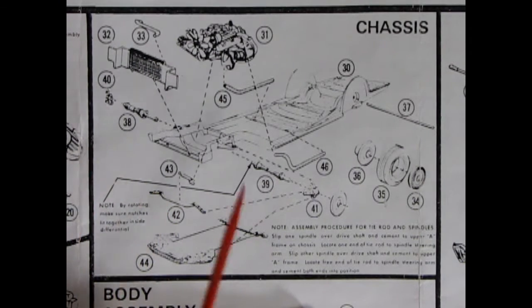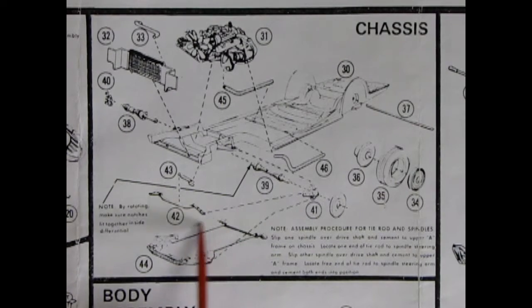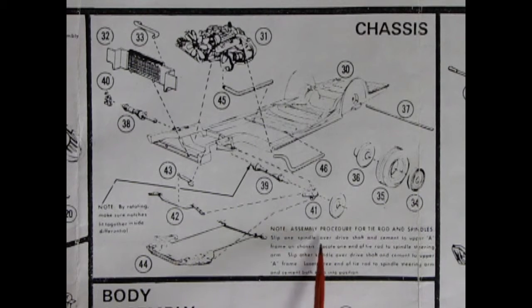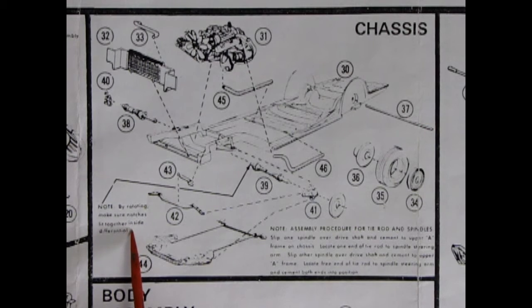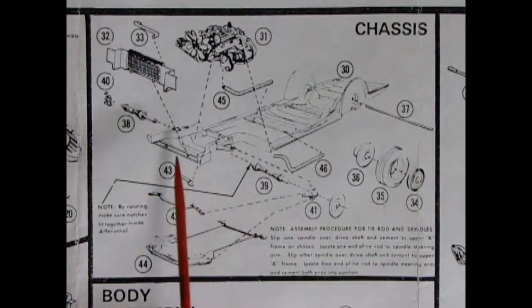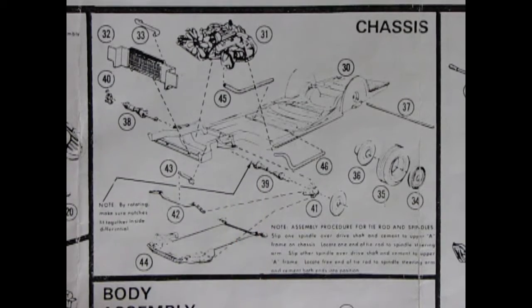There is front kingpins and steering, as well as all the different braces and our tie rods here. Oh, no, this is tie rods. This is the undercarriage. It says, note, assembly procedure for tie rods and spindles. Slip one spindle over drive shaft and cement to upper A frame on chassis. Locate one end of tie rod to spindle steering arm. Slip other spindle over drive shaft and cement to upper A frame. Locate free end of tie rod to spindle steering arm and cement both ends into position. Note, by rotating, make sure notches fit together inside differential. So, this is quite a complex operation up here for that front wheel drive. But with a bit of patience, you should be able to get it.